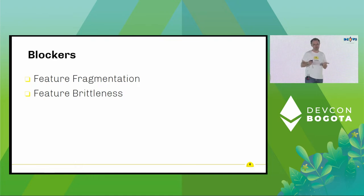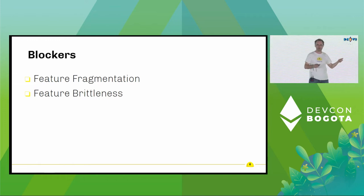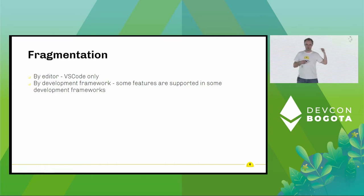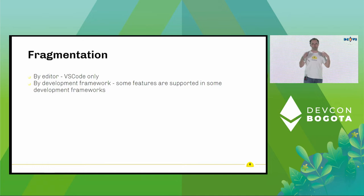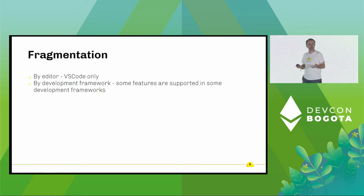First off, feature fragmentation. We have features which are siloed by editor and also siloed by development framework. The other is feature brittleness — can you rely on a feature to always be there and to do the right thing? For fragmentation, clearly extensions we have are built in VS Code. Maybe the lack of support in Vim is why there aren't as many people using Vim — if they had those advanced features in Vim, they would be using them. So that's one form of fragmentation.